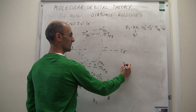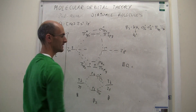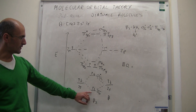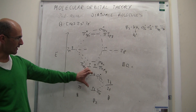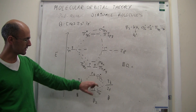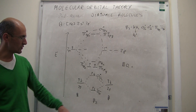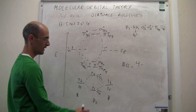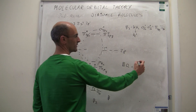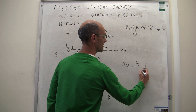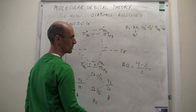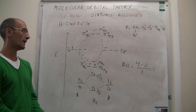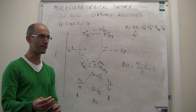We can also calculate the bond order: there are 4 electrons in bonding orbitals and 2 electrons in antibonding orbitals. (4 minus 2) divided by 2 gives a bond order of 1. So in principle, boron-2 should be a stable molecule with a covalent bond.